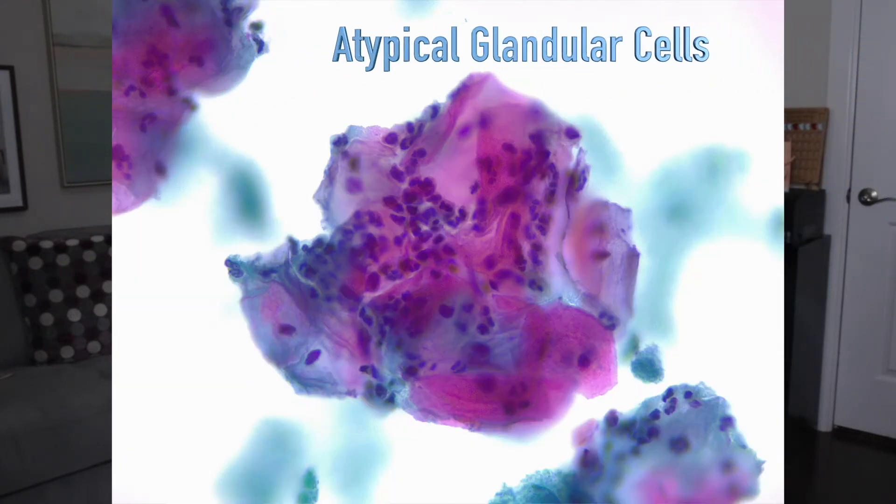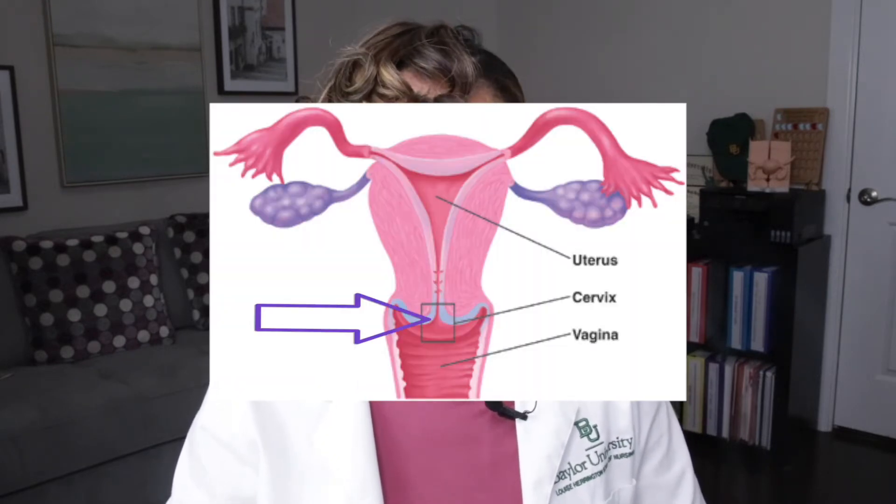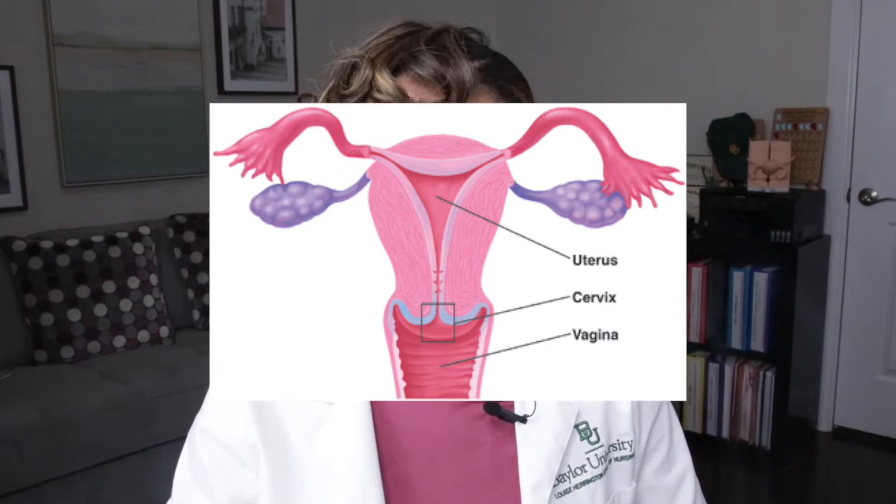What if the pap smear shows AGC? This stands for atypical glandular cells. These types of cells are found on the inner part of the cervix or the lining of the uterus. The pap smear showing AGC can be a sign of a more serious problem up inside the uterus. Your provider may ask you to come back for a colposcopy, and because a colposcopy is the next step for many of the abnormal results I'm going to discuss, I will explain the colposcopy procedure in detail later.